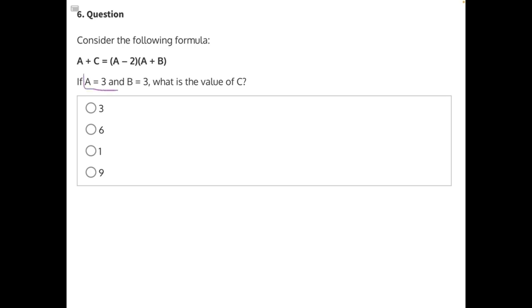Let's start by substituting in our known variables. Instead of A, we would put 3, because A and 3 are equivalent. Plus, instead of C, we would put 3 again, because 3 and C are also equivalent.